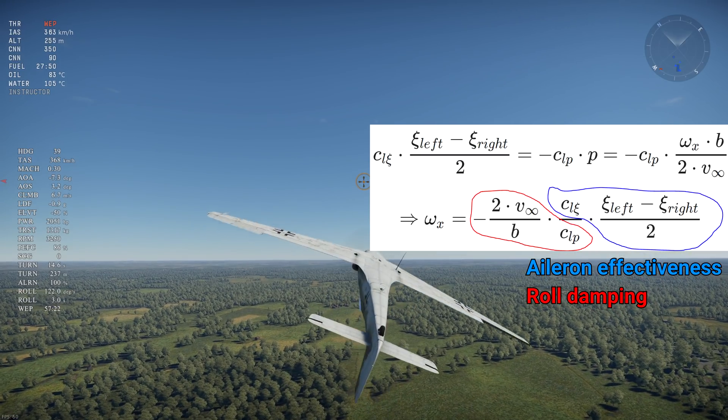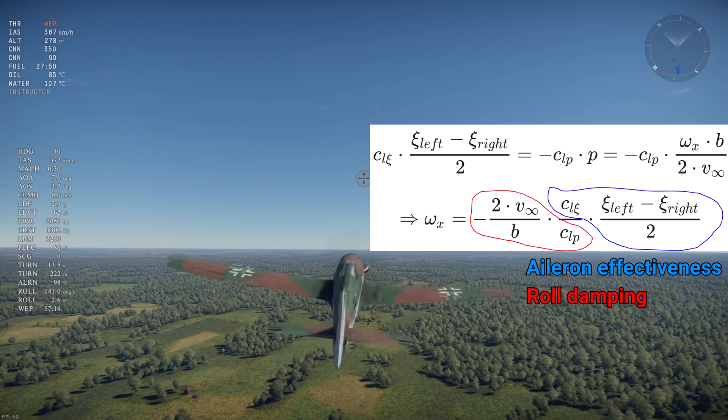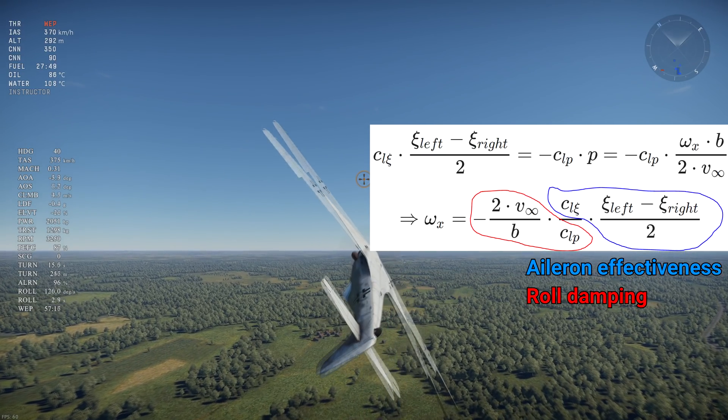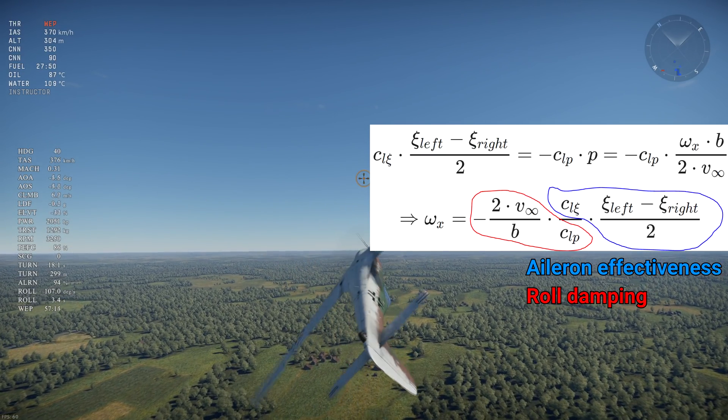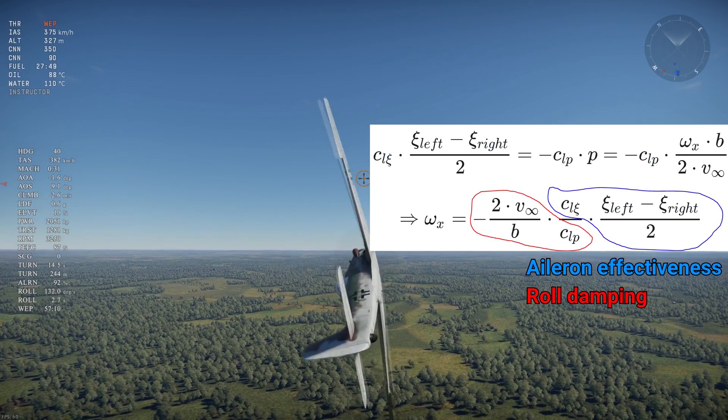Aileron effectiveness depends on the size and position of the ailerons, their maximum deflection angle, and their relative surface area compared to the wing. Roll damping mainly depends on wingspan, true airspeed, and aspect ratio.